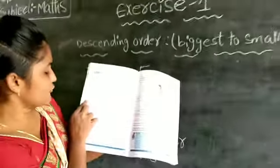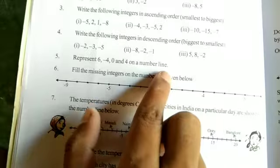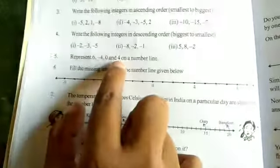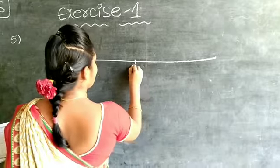Third one is 5, 8, minus 2. Now we will find ascending order and descending order. For homework, class notes will be a home trial. Next, see the fifth one: represent 6, minus 4, 0 and 4 on a number line. The number line is 30 units — we will represent 6, minus 4, 0 and 4.